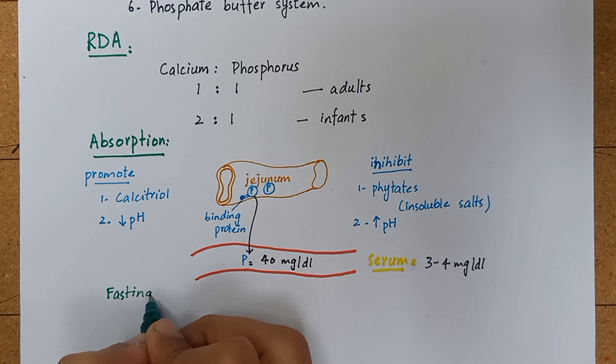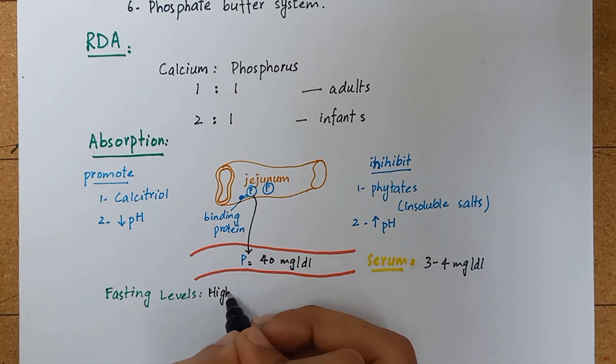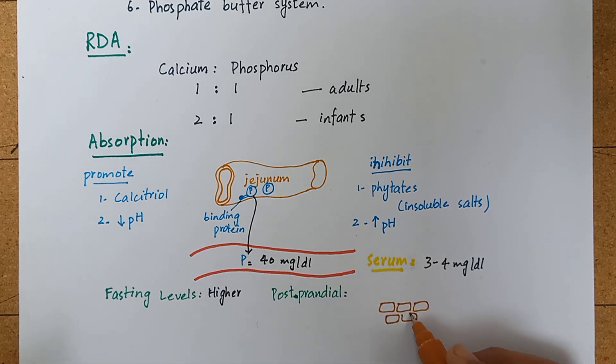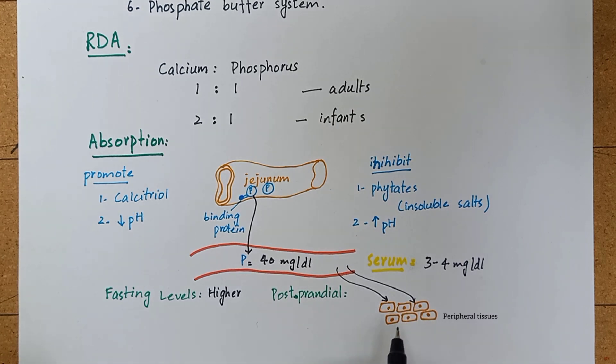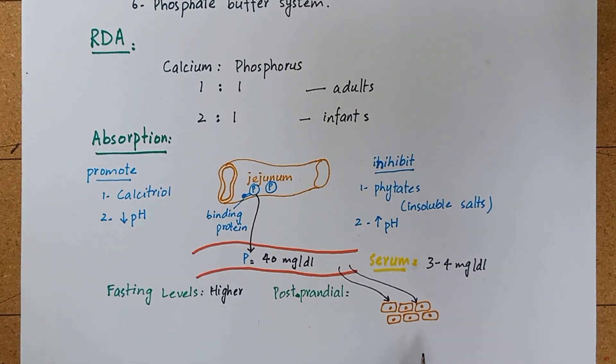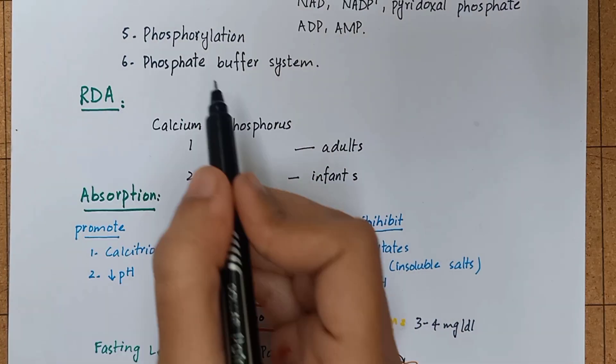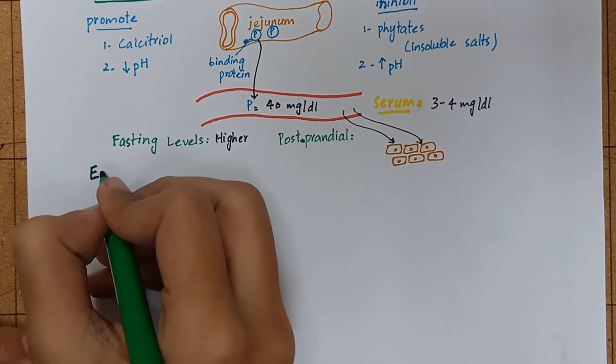A very interesting point to note here is that the fasting serum phosphate levels are higher than the postprandial levels of phosphate. This is because after a meal intake, large amounts of phosphate from serum is drawn by the cells for metabolism as phosphate is required in phosphorylation reactions as a component of coenzyme and for the formation of important compounds.